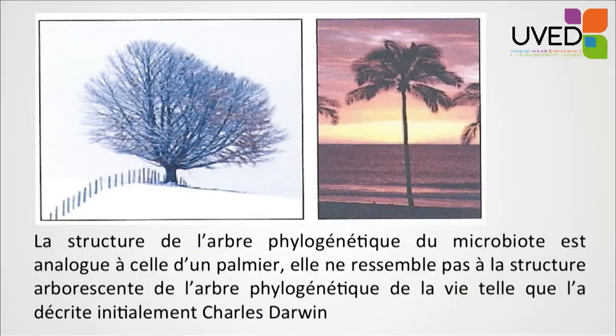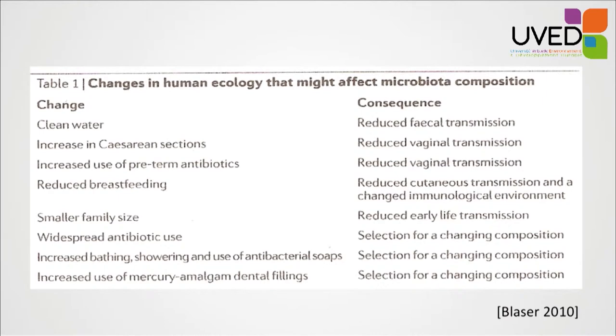Man, who normally shouldn't be able to do so, can digest an apple, although he doesn't have the necessary tools in the gut or the stomach to digest an apple. The phylogenetic tree for microbiota doesn't look like a normal tree — it looks more like a palm tree. The live arborescence is very special.